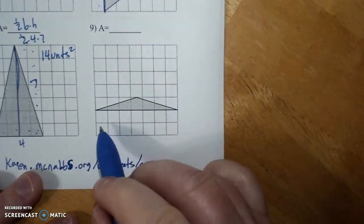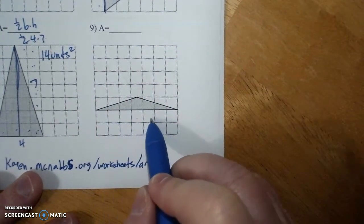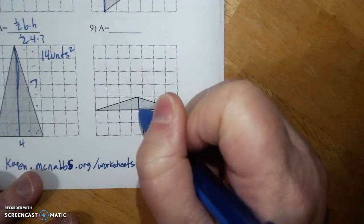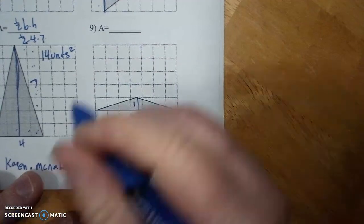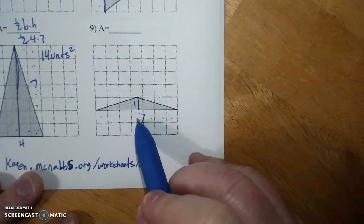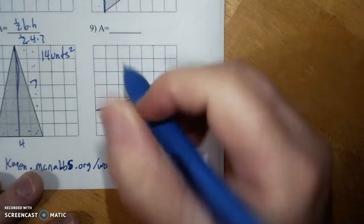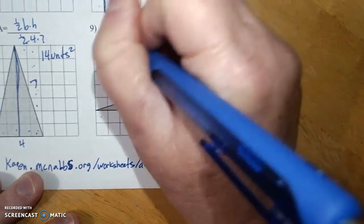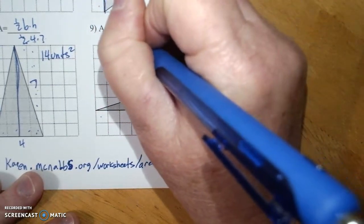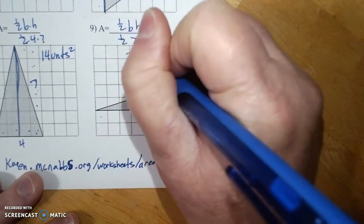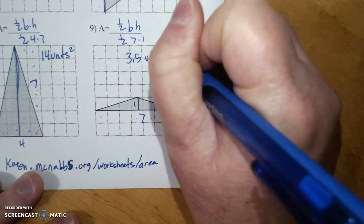Here, it's the flat side. One, two, three, four, five, six, seven. Here, it's the perpendicular, which is one. One, two, three, four, five, six, seven. So, it's one half base times height. One half of seven times one. Half of seven is 3.5 units squared.